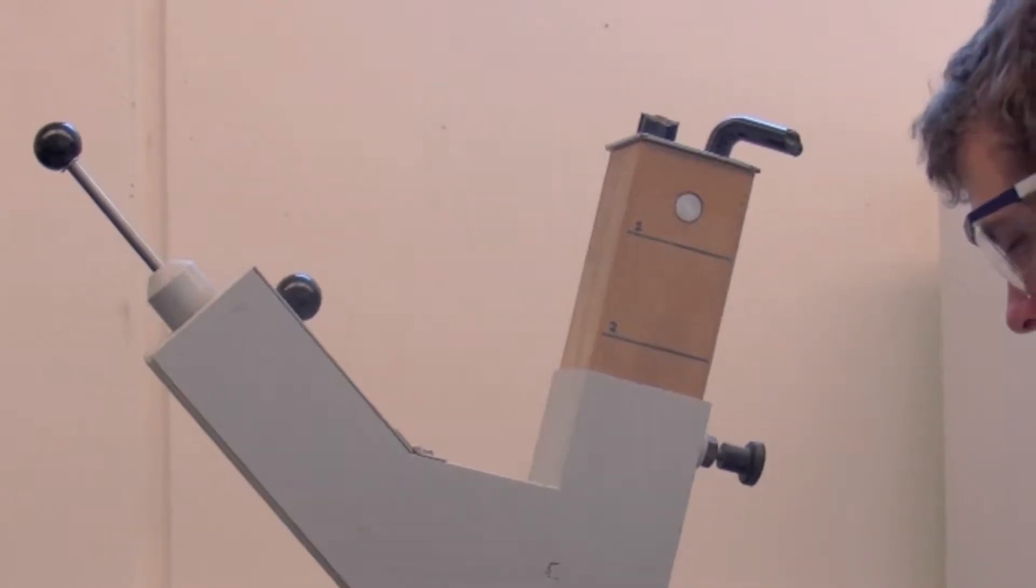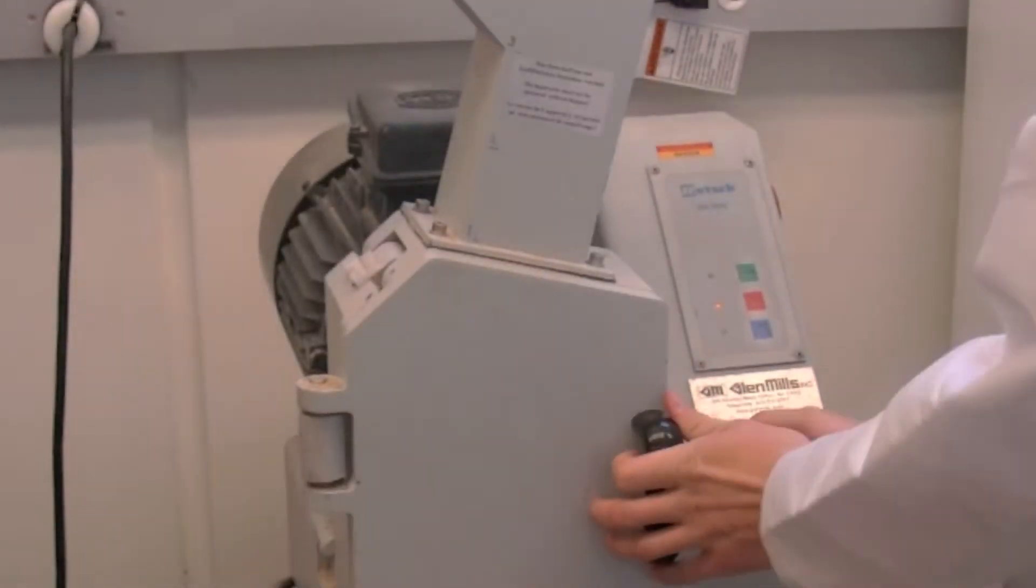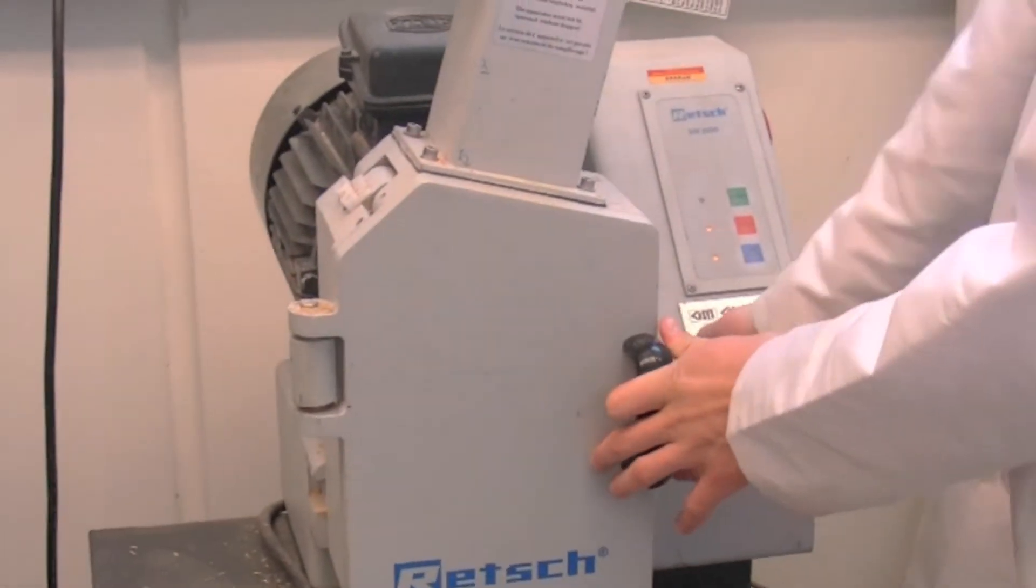The SM200 Heavy Duty Cutting Mill reduces biomass particles to a predetermined size as required for use in thermochemical processing.